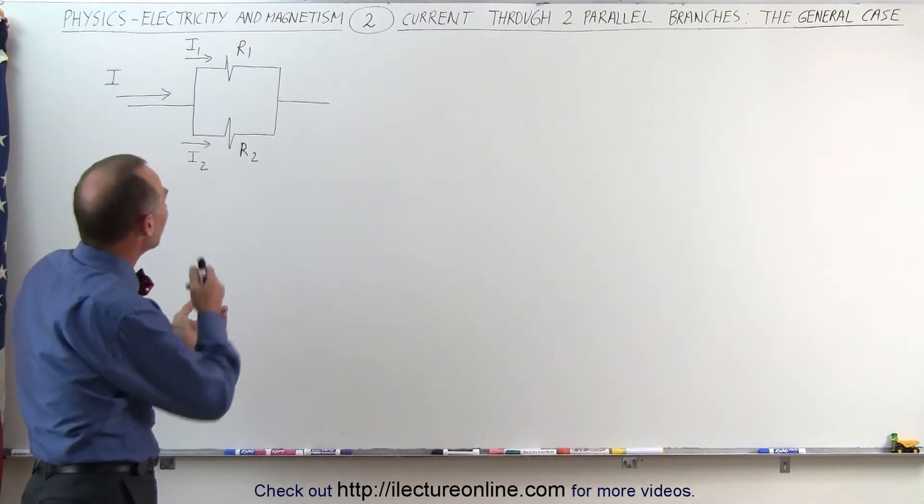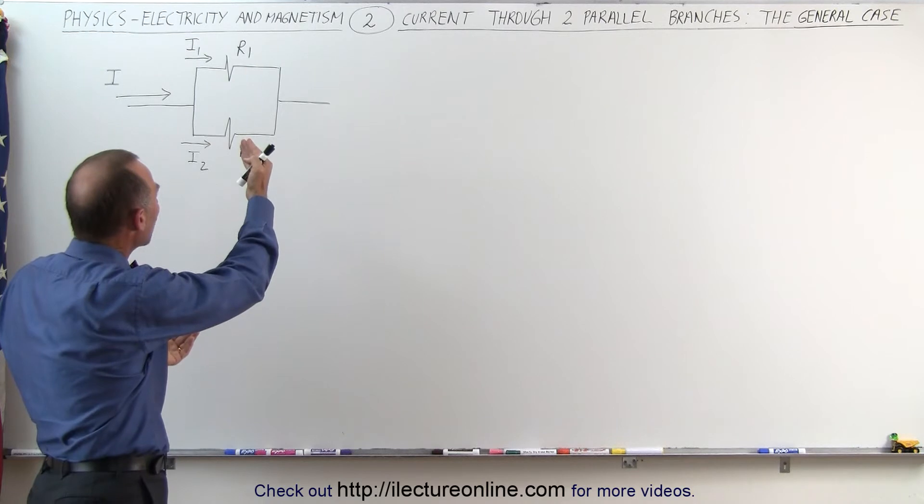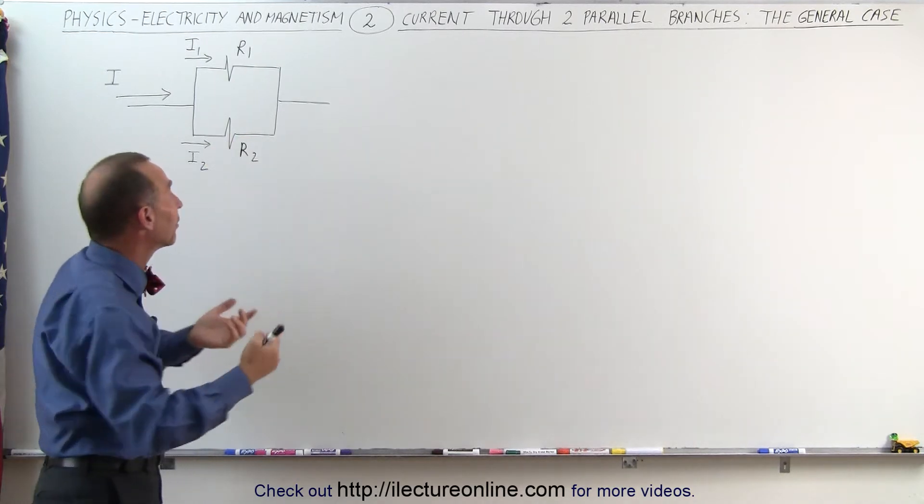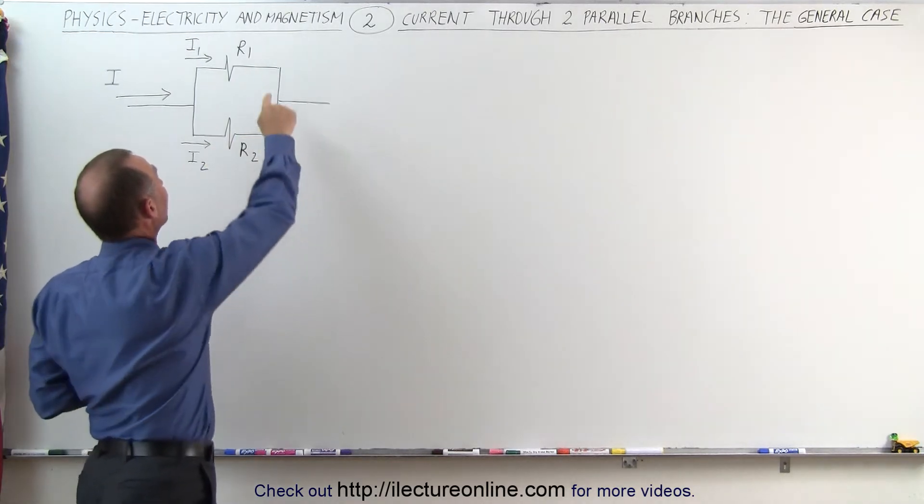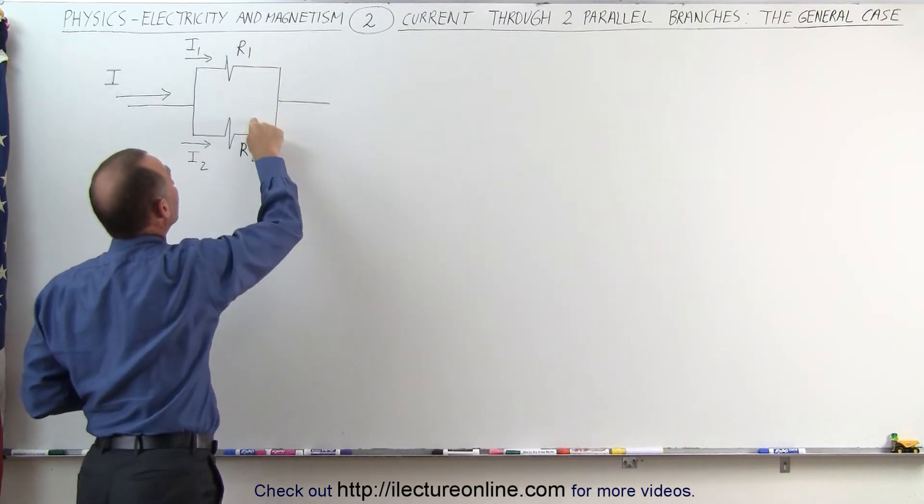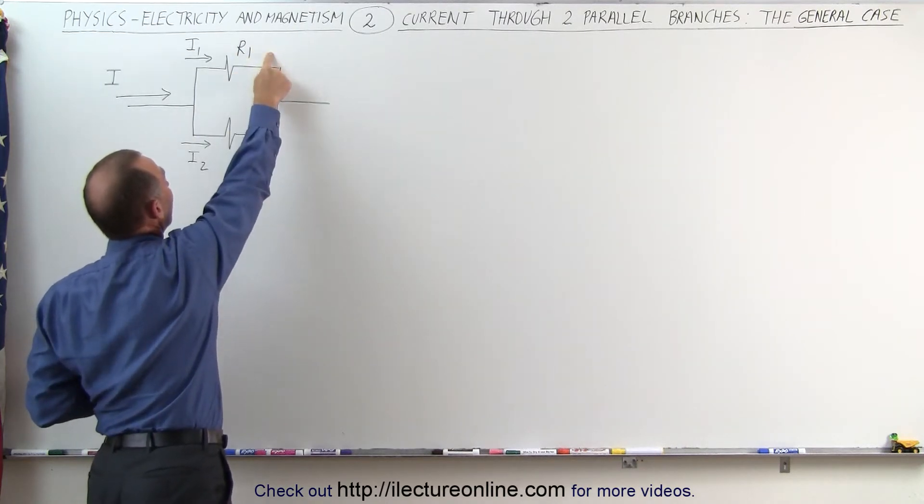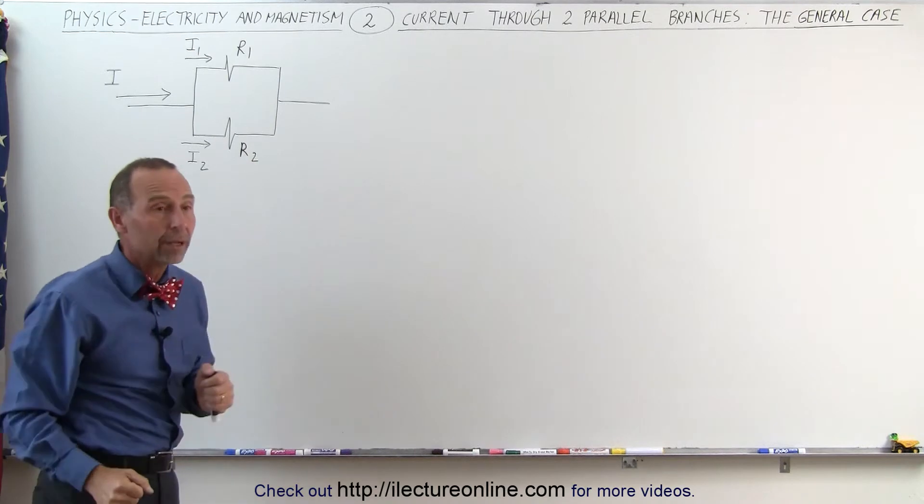How much current will flow through the top branch relative to the bottom branch? Well, that depends on the relative size of the resistance. If R1 is bigger than R2, less current will flow through the top branch, more current will flow through the bottom branch.